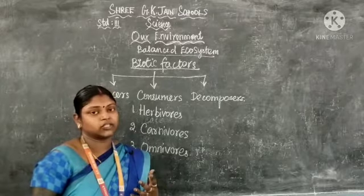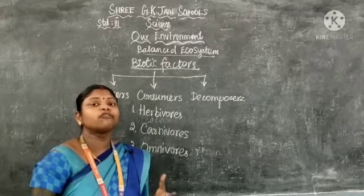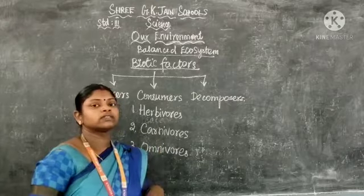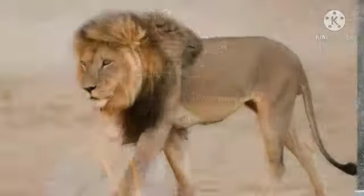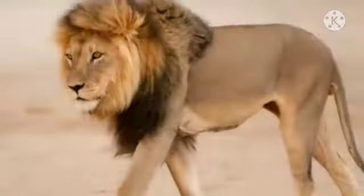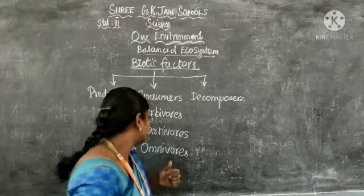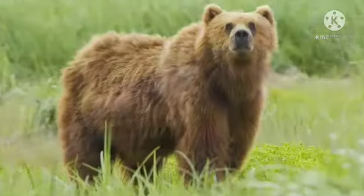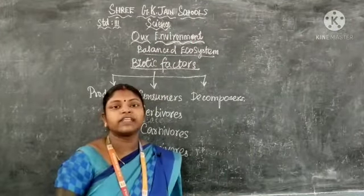The next one is carnivores. Carnivores eat flesh. Consumers directly or indirectly get their food from the producers. Carnivores are flesh-eating animals. Examples are lion, tiger, and cheetah. Omnivores eat both plants as well as the flesh of other animals. Examples of omnivores are crow and bear.